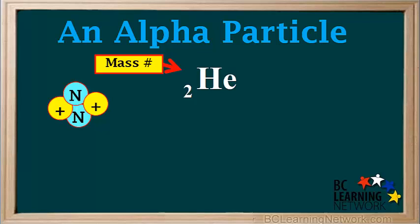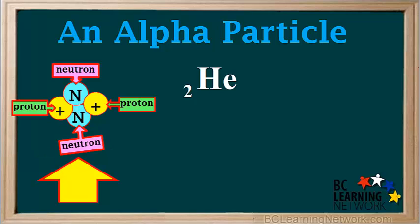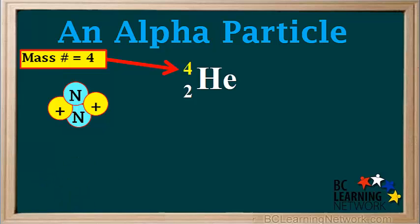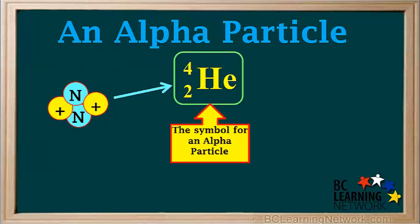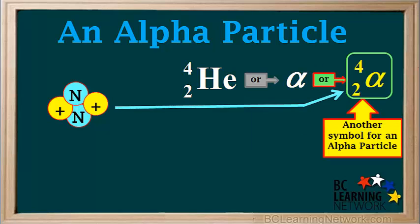The number on the top left is called the mass number. Every proton and every neutron has a mass of one, so two protons and two neutrons have a total mass of four. So the mass number of an alpha particle is equal to four, written on the top left of the symbol. An alpha particle can be represented by the symbol He with a four on the top left and a two on the bottom left, or by the lowercase Greek letter alpha, sometimes shown with a four on the top left and a two on the bottom left. All three symbols are acceptable.